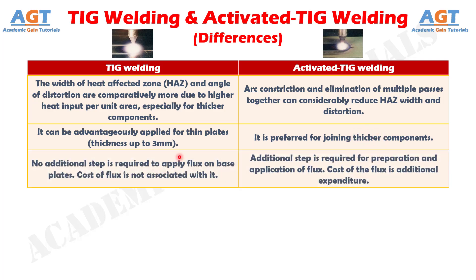Number 8: in TIG welding, no additional step is required to apply flux on base plates, and the cost of flux is not associated with it, whereas in activated TIG welding, an additional step is required for the preparation and application of flux, and the cost of the flux is an additional expenditure.